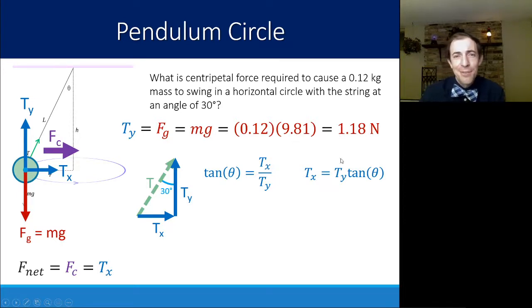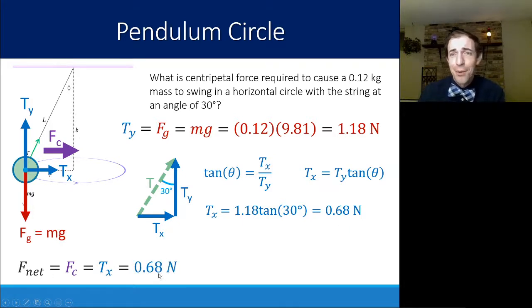Plugging that in for my equation here, Tx has to be equal to 1.18 times the tangent of 30. I'm making sure that I'm in degree mode on my calculator. That comes to 0.68 newtons. And then again, that's what I was looking at here, 0.68 newtons is Tx, which means that the centripetal force is 0.68 newtons as well.